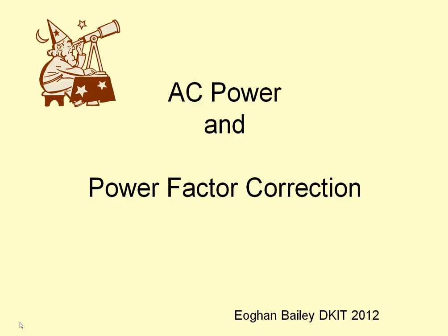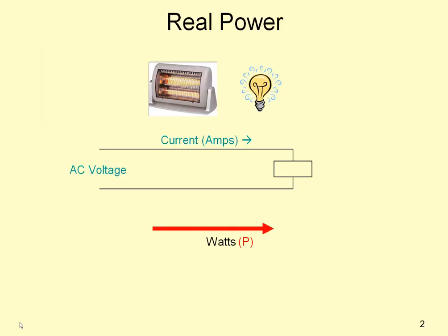This is a short presentation on AC power and power factor correction. When we apply an AC voltage to a resistance, power is dissipated in the form of heat, light or work, called watts, with the symbol P.